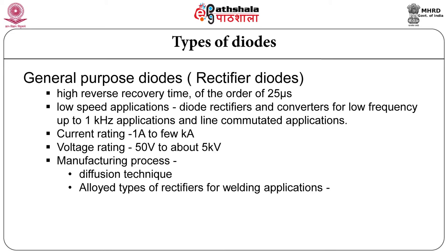Current rating of these diodes ranges from 1 ampere to a few kilo amperes. Voltage rating range is 50 volt to 5000 volt. The manufacturing process is diffusion technique. Alloy type of rectifiers are generally used for welding type of applications.